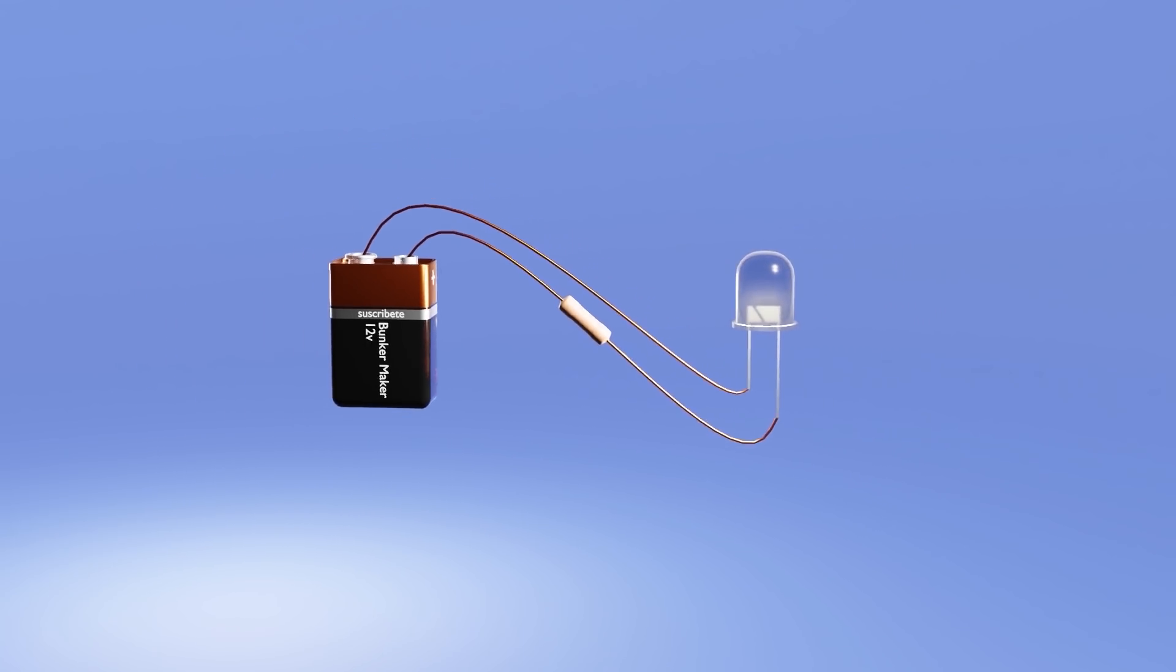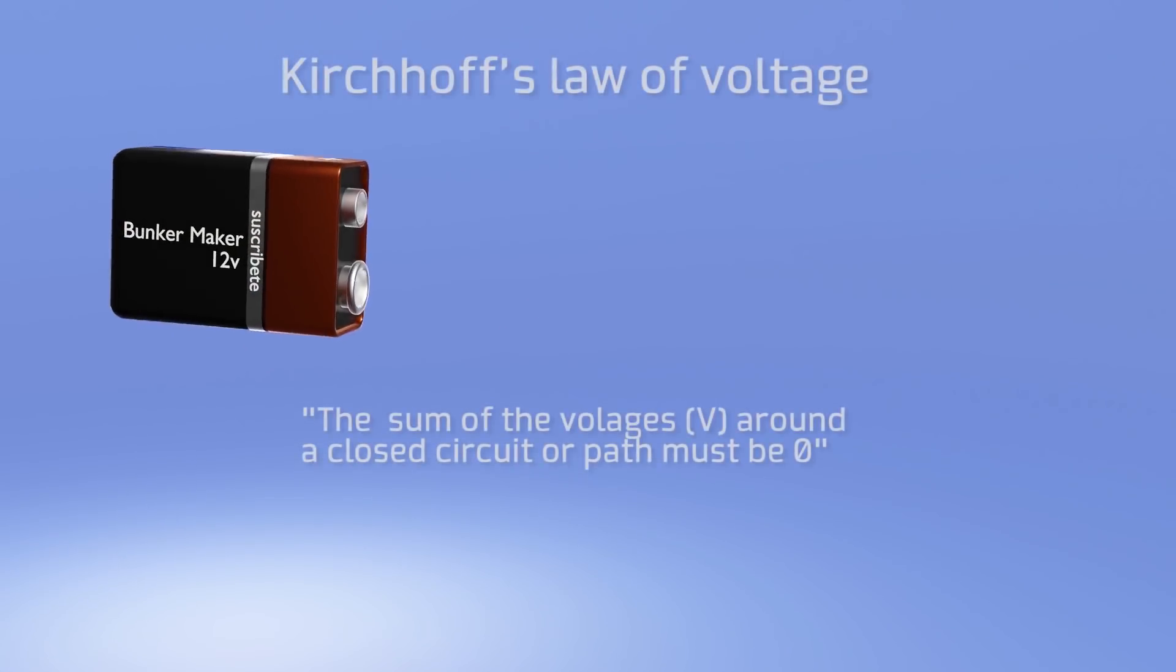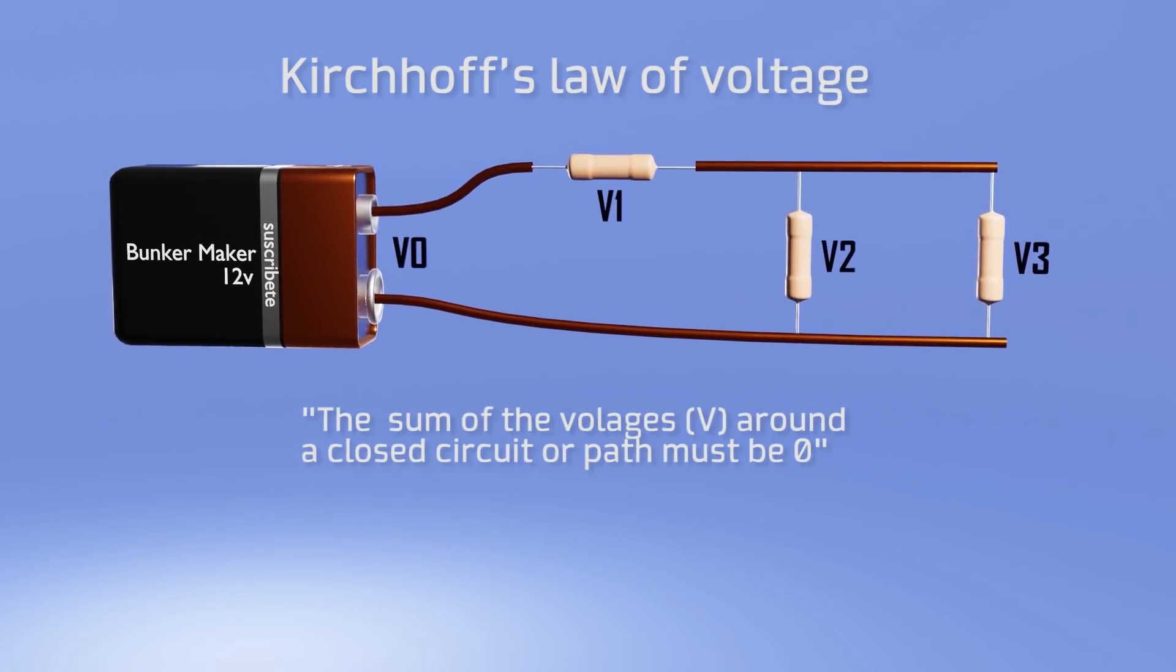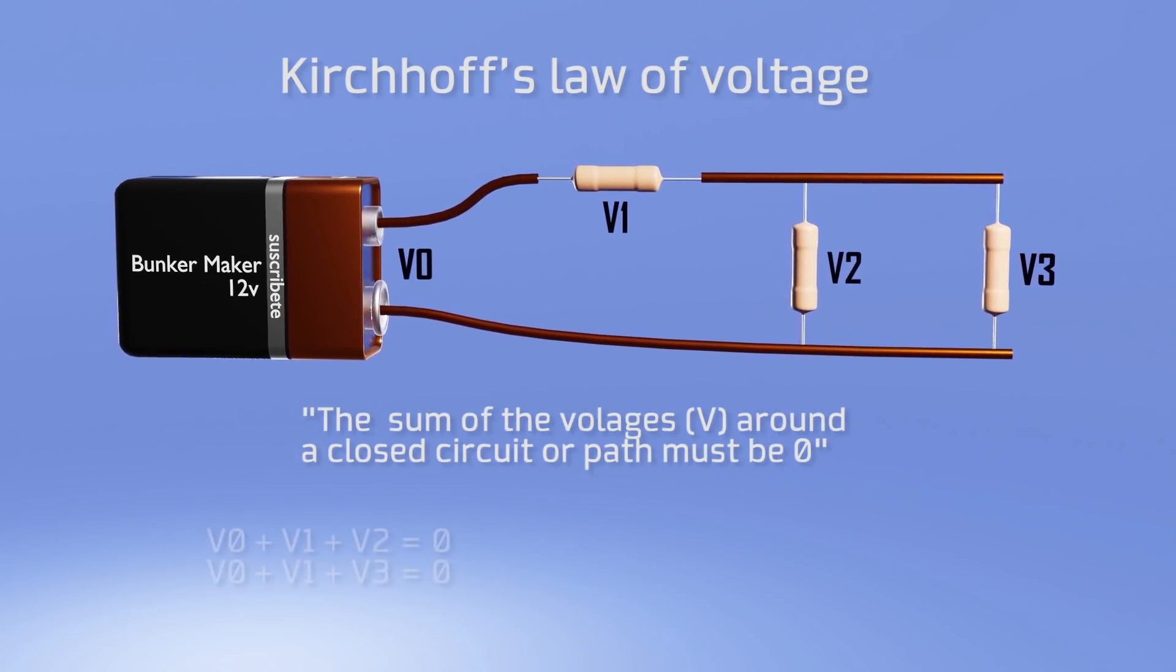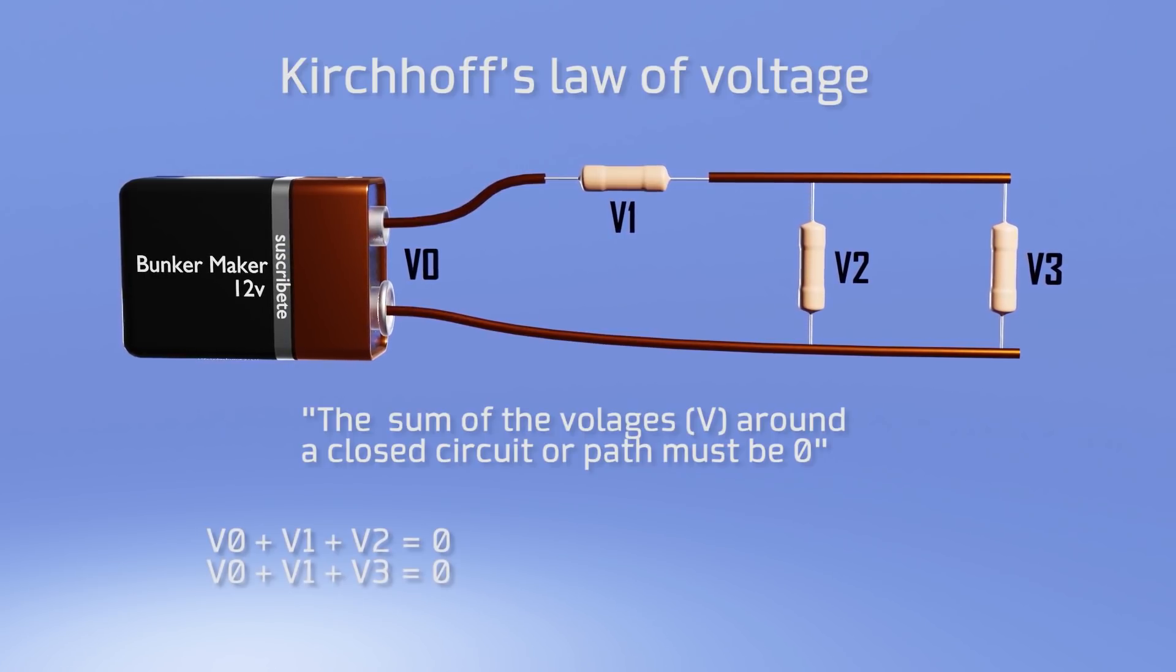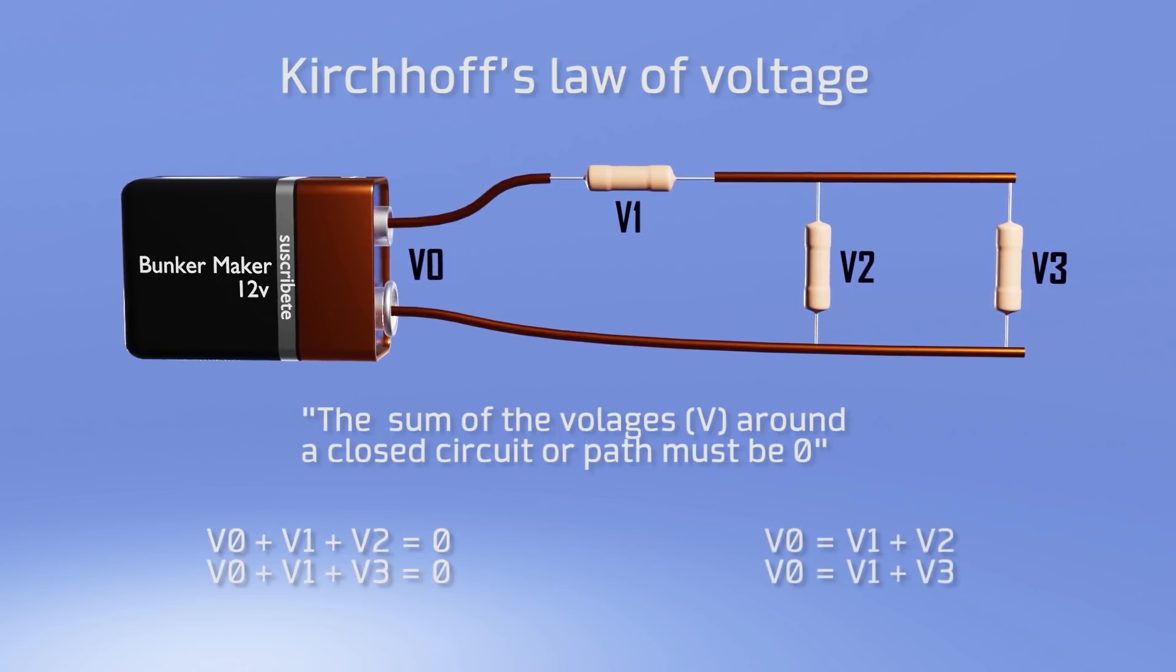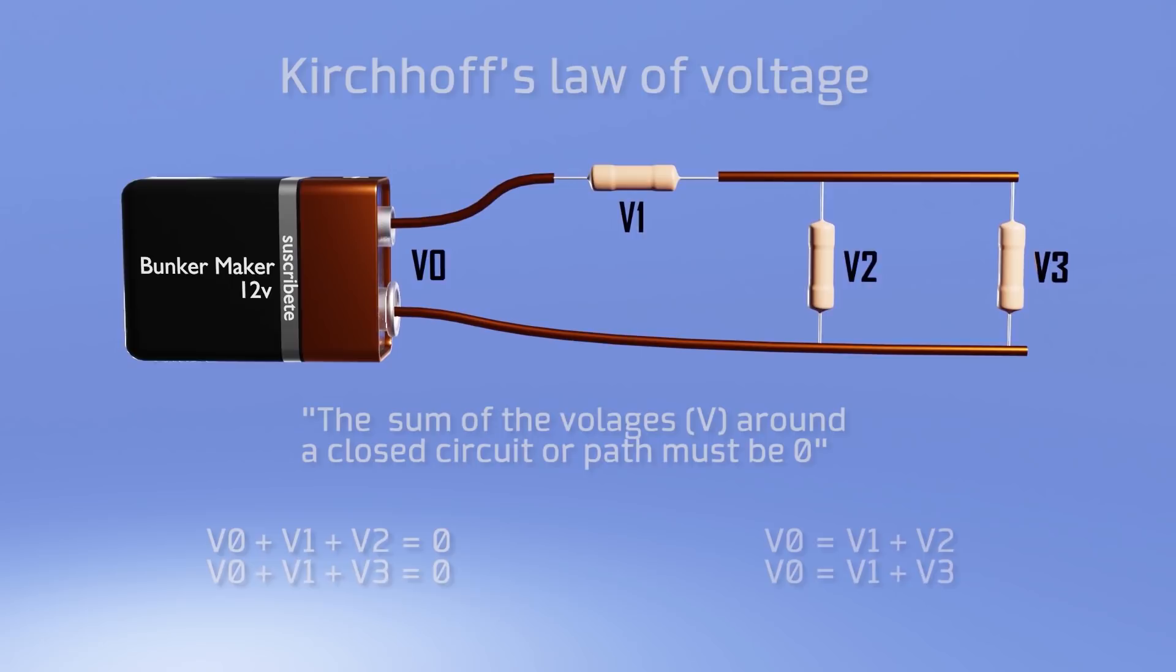But if you want to continue on your own, I summarize three extremely important laws. The first one is Kirchhoff's voltage law, which tells us that if we add all the voltages following a closed path in a circuit, the value must be zero. Or in other words, the sum of the voltage in each of the components in this trajectory must be equal to the voltage in the power source that is supplying them.